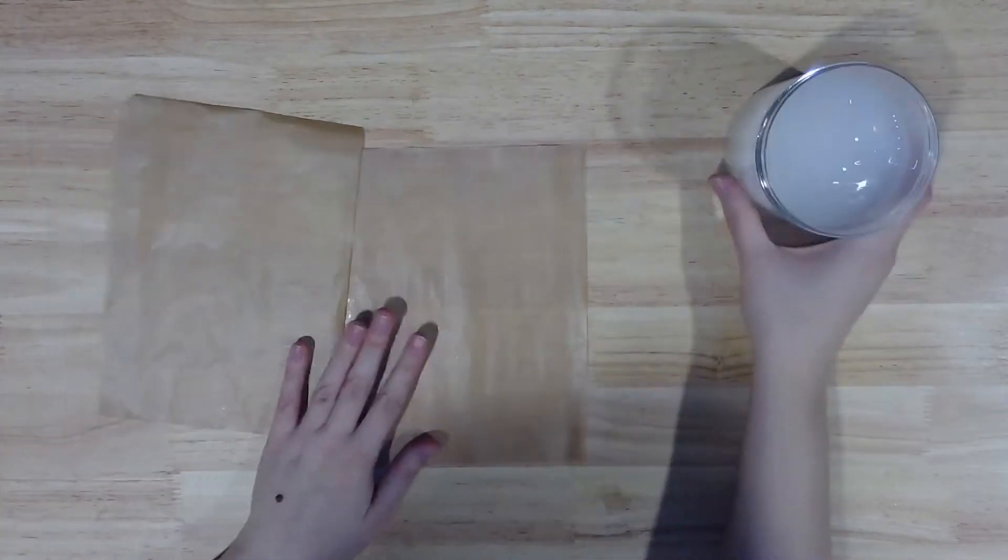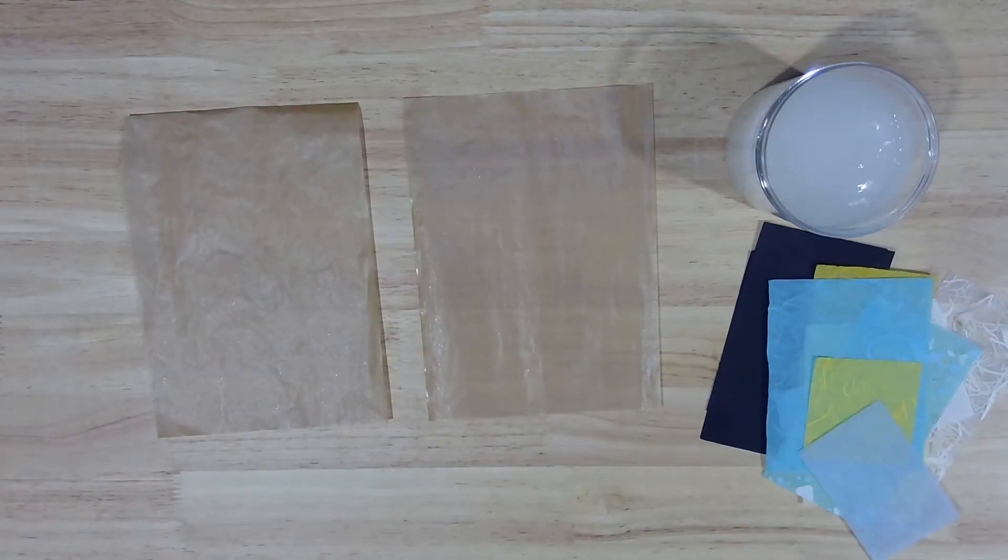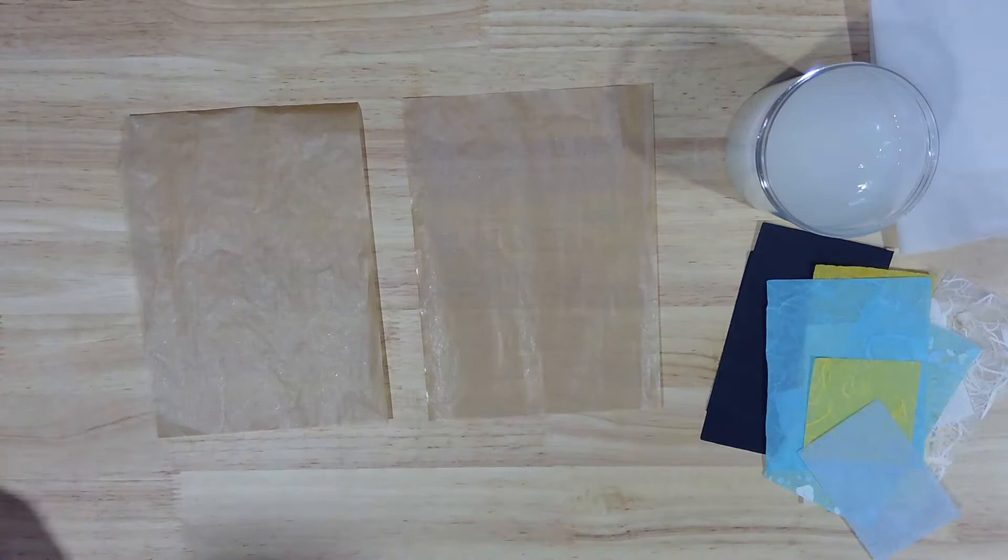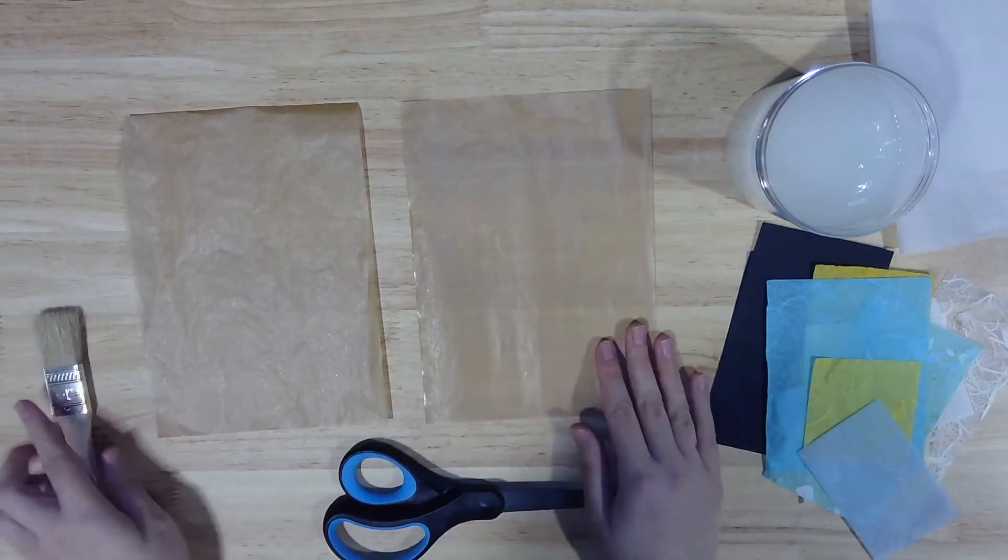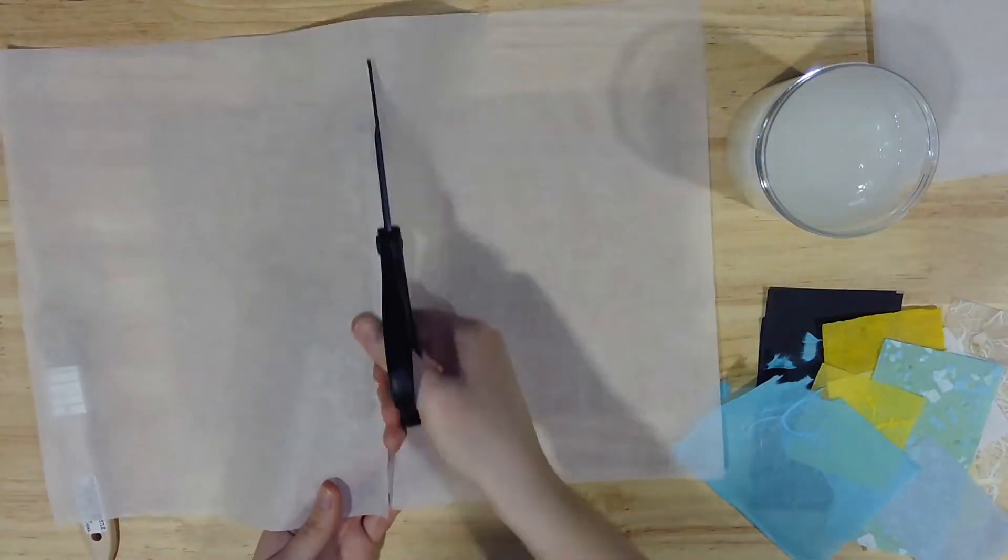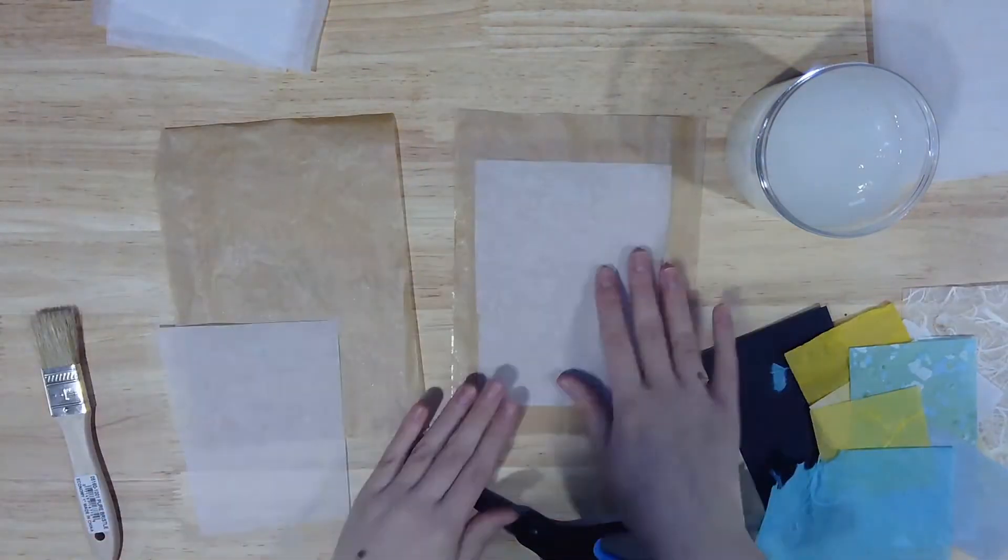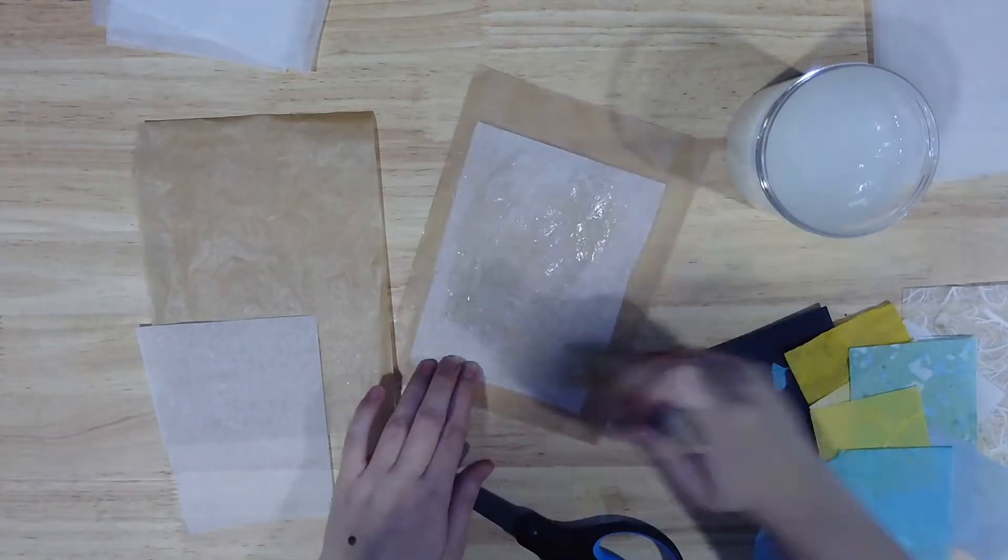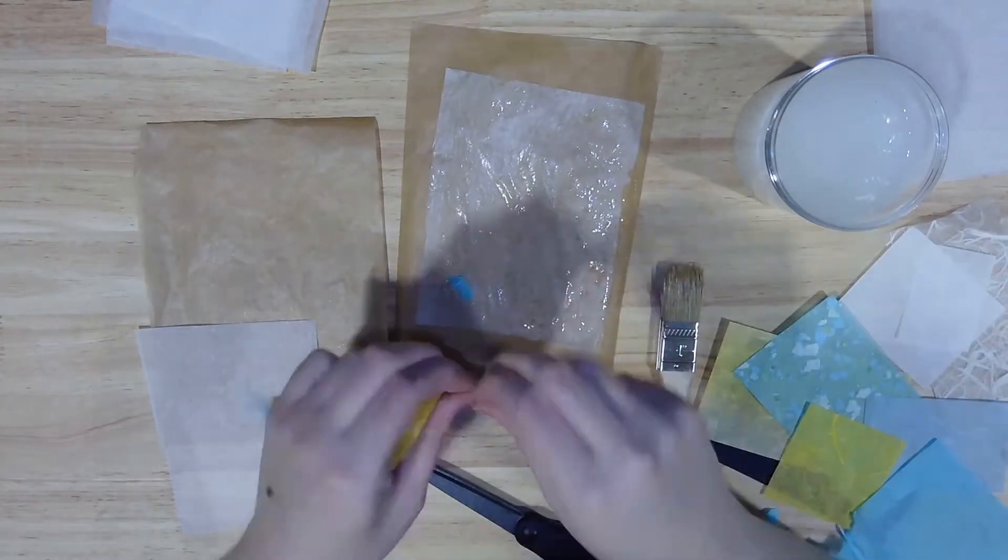Once your glue is cool enough to work with, we can start making our paper. Lay out both sheets of parchment paper on your table. You'll want your mulberry and tissue papers handy as well as your paintbrush. You might also want a pair of scissors from home. Cut or tear your tissue paper into rectangles a bit smaller than your parchment paper. Place one sheet of tissue on your parchment paper, then paint a coat of cornstarch glue over the sheet. It's completely fine if the paper wrinkles up a bit.